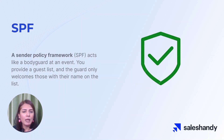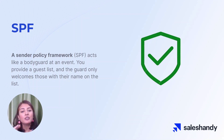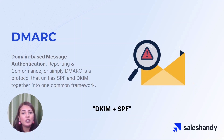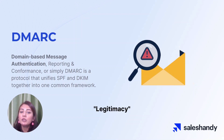Next up, we have SPF. Imagine you're hosting a big event and you want to make sure that only the people you've invited are able to come in. That's where a Sender Policy Framework, or SPF, comes in. It's like a virtual bodyguard that checks the guest list to make sure only the people you've approved are allowed access, protecting your email domain from unwanted or unauthorized access. The third DNS record is DMARC, which stands for Domain-Based Message Authentication, Reporting, and Conformance. This is a protocol that helps protect email communications by bringing together SPF and DKIM into a single unified framework. DMARC allows email domains to set policies that specify how emails from their domain should be handled by the recipients' mail servers, helping reduce spam and phishing attacks and ensuring that legitimate emails are delivered to their intended recipients.